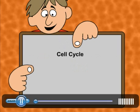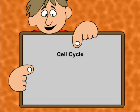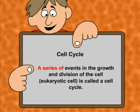What is cell cycle? Let us define. A series of events in the growth and division of a cell, specially a eukaryotic cell, is called a cell cycle.